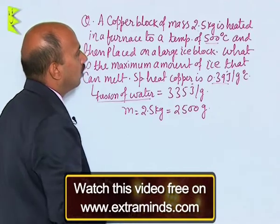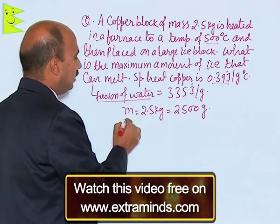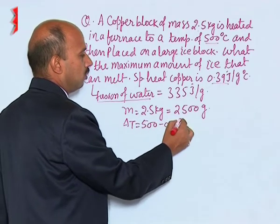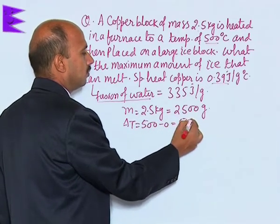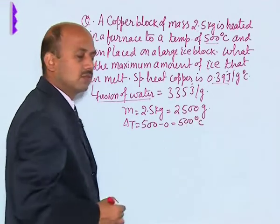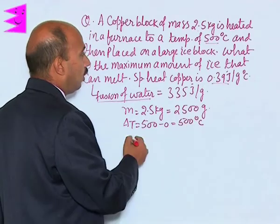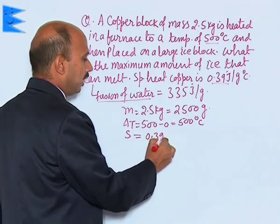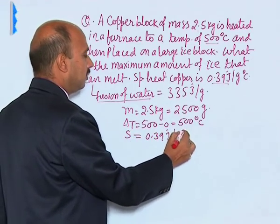Now, we can also write the change in temperature that is 500 minus 0 is equal to 500 degree Celsius. Now, specific heat of copper is 0.39 joule per gram degree Celsius.